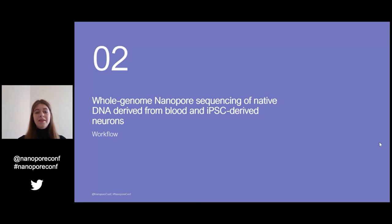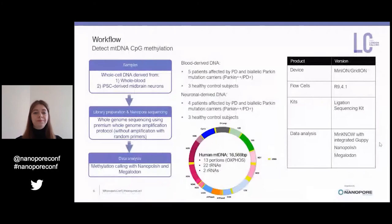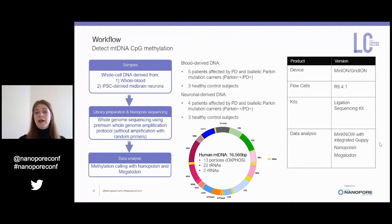We used whole genome nanopore sequencing of native DNA to investigate mtDNA CpG methylation. The sample size in our study was small. We included five patients affected by PD who were also biallelic Parkin mutation carriers, and three healthy control subjects. DNA extracted from whole blood, and except for one patient, from induced pluripotent stem cell-derived midbrain neurons were analyzed to provide a suitable cell model to investigate a neurological disease.